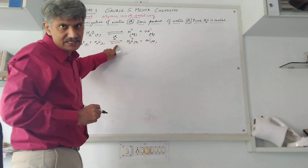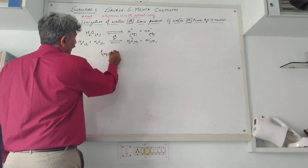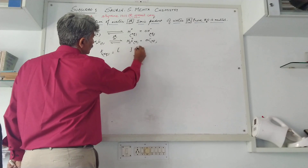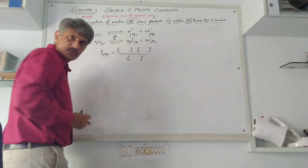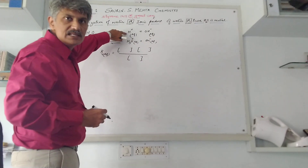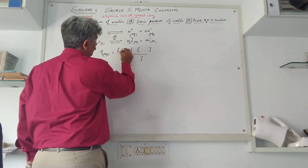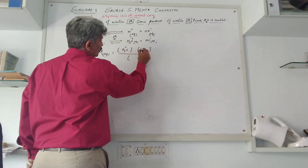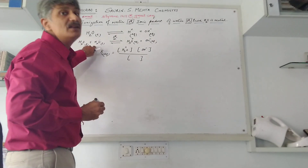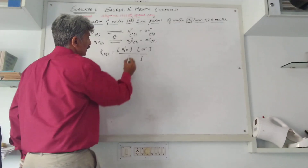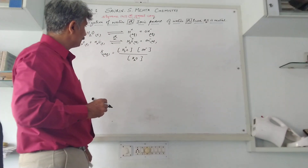As equilibrium is set up, we can write an equilibrium constant Keq, which is the concentration of products to that of reactants. The products are H⁺ (or H₃O⁺) and OH⁻, and the reactant is the undissociated water H₂O, whose concentration we place in the denominator.